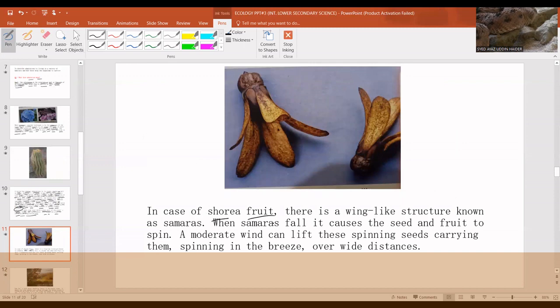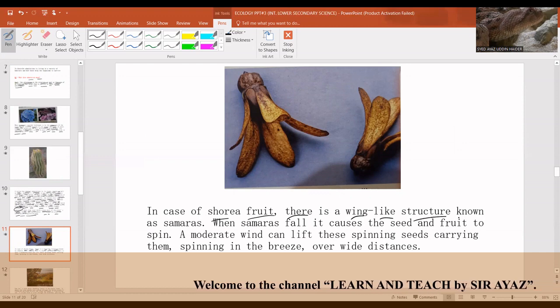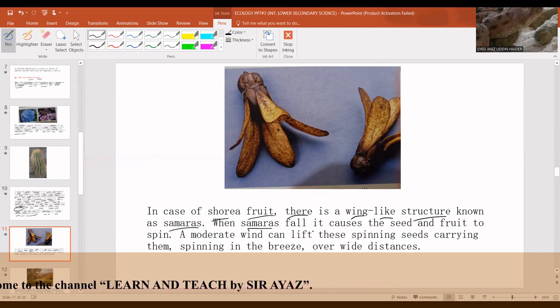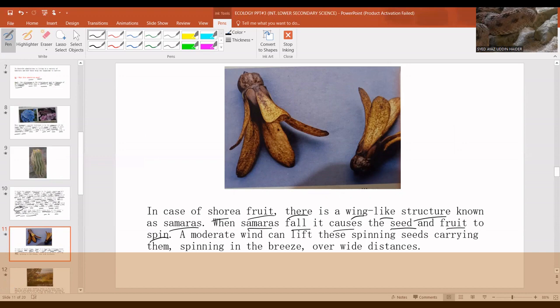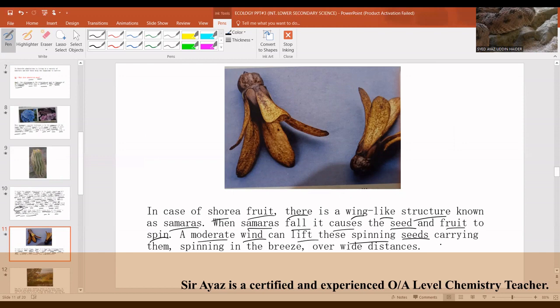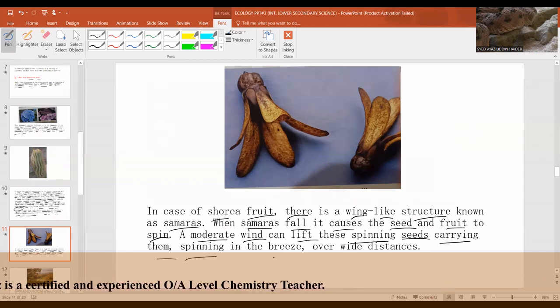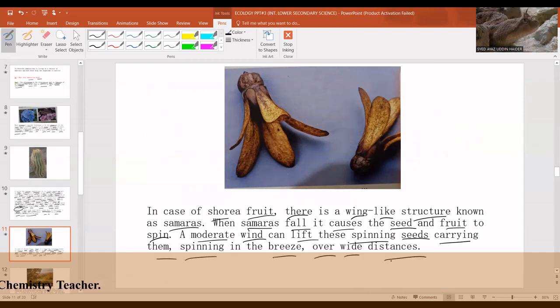In the case of sori fruit, there's a wing-like structure known as samaras. When samaras fall, it causes the seed and fruit to spin. A moderate wind can lift these spinning seeds, carrying them spinning in the breeze over wide distances.